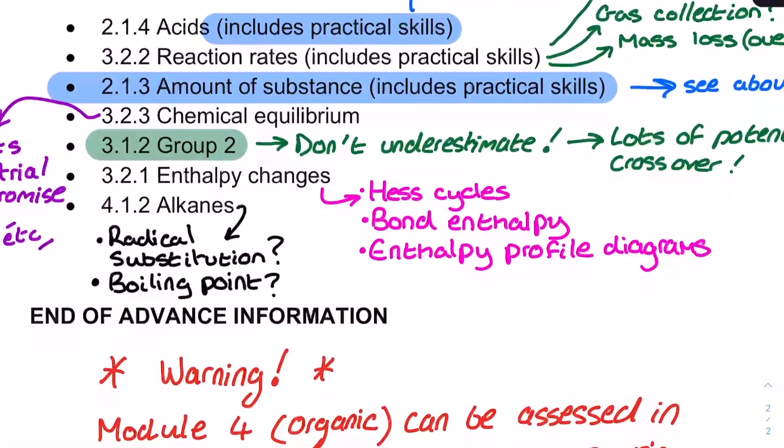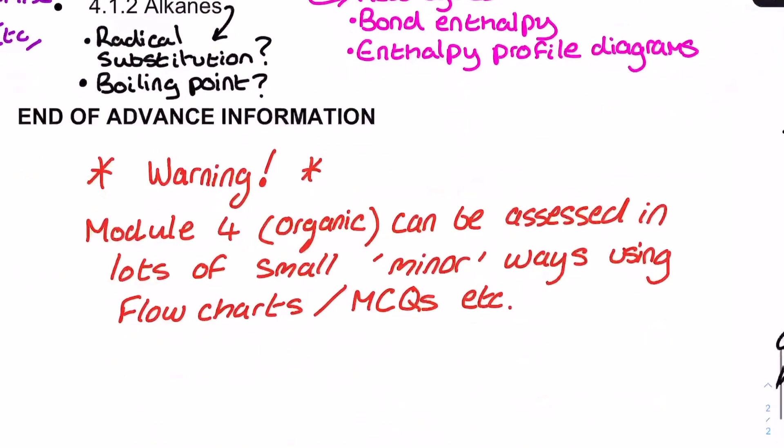Expect crossover. You're not going to get entirely, all the way through the paper, questions that focus on one thing at a time. So, please be very careful with the list. And a final reminder that Module 4 can be assessed in a lot of small, minor ways using flowcharts and in the breadth-in-chemistry paper, multiple-choice questions.